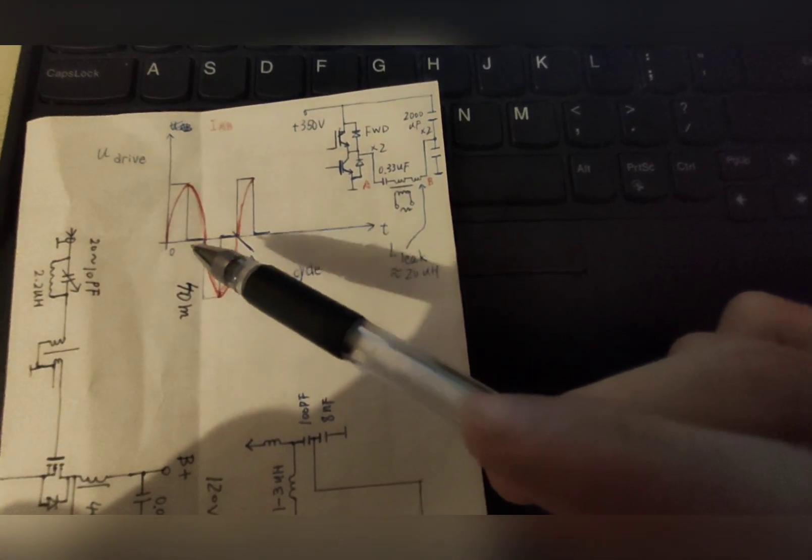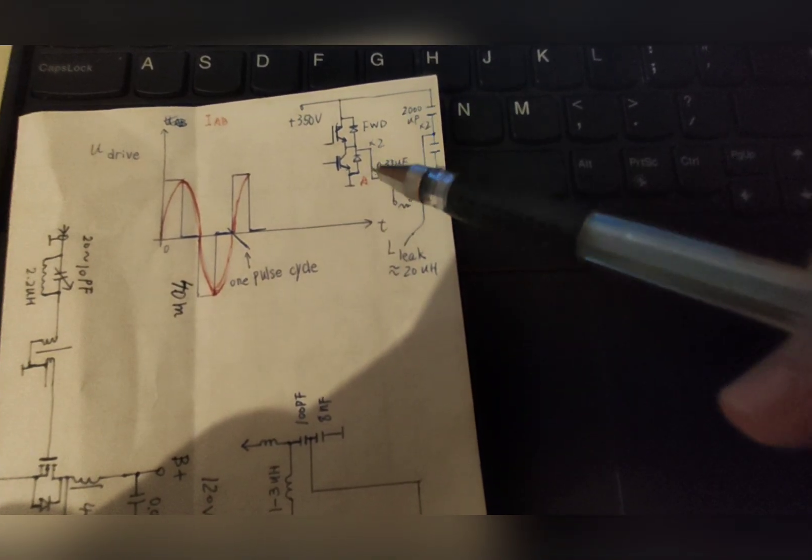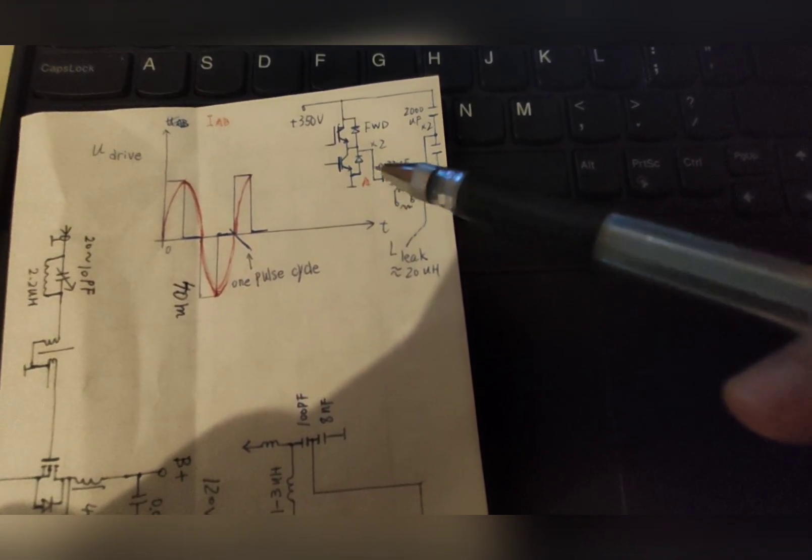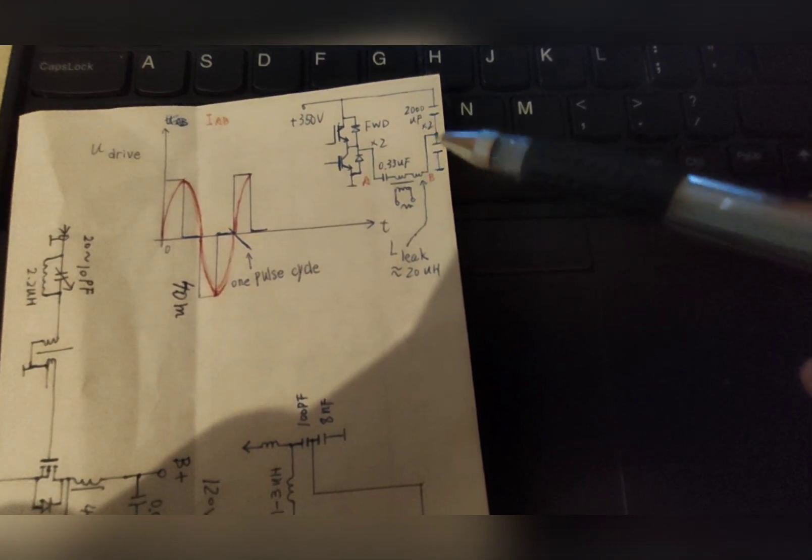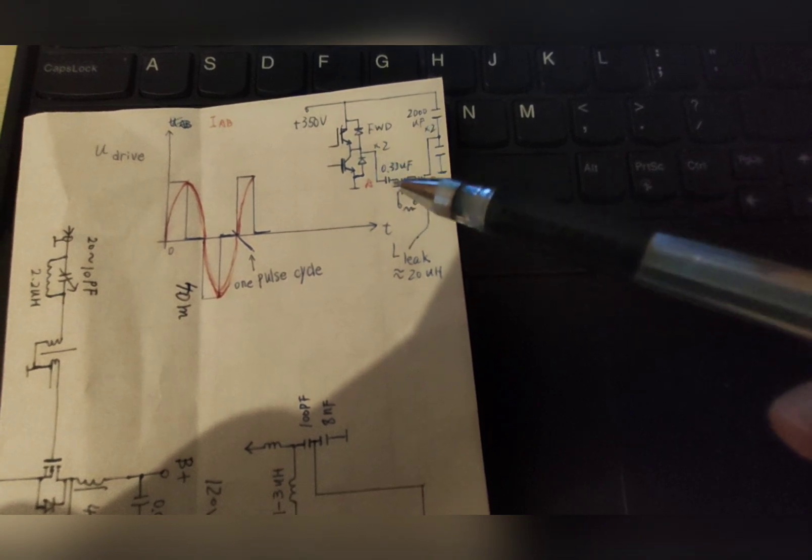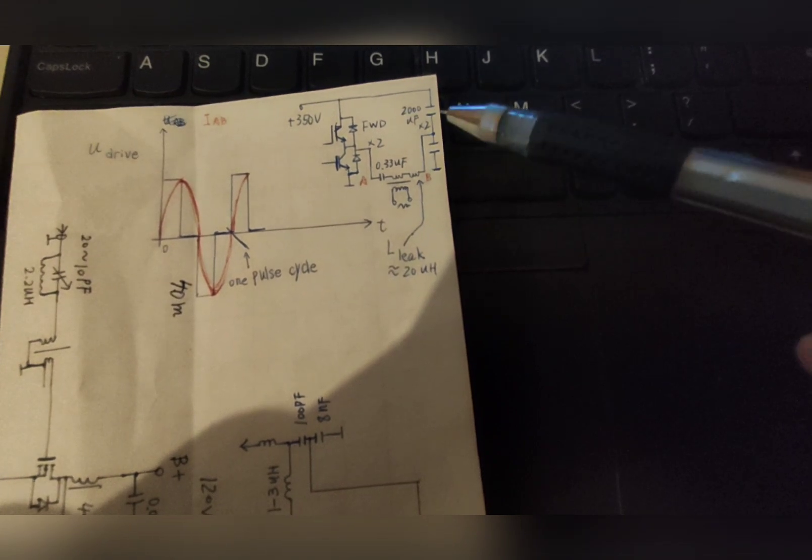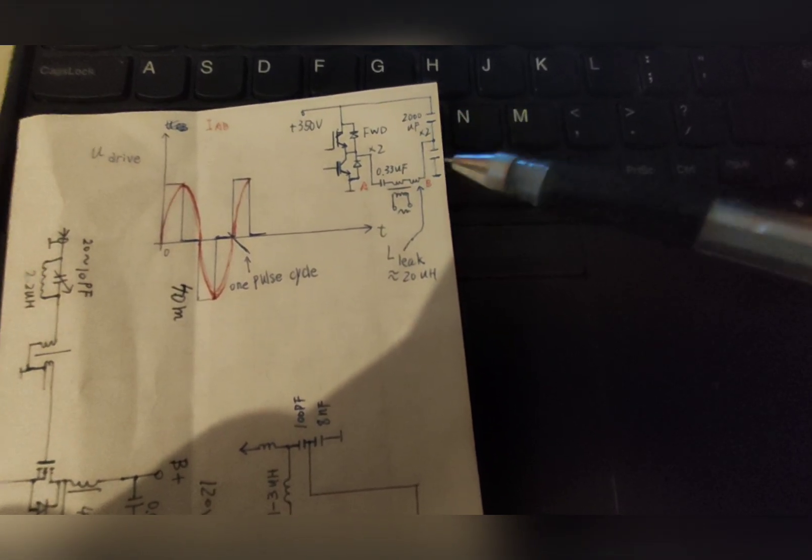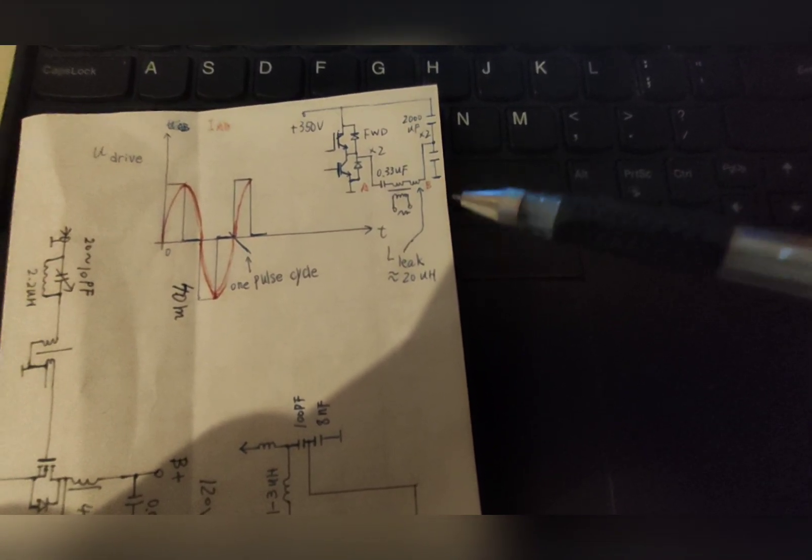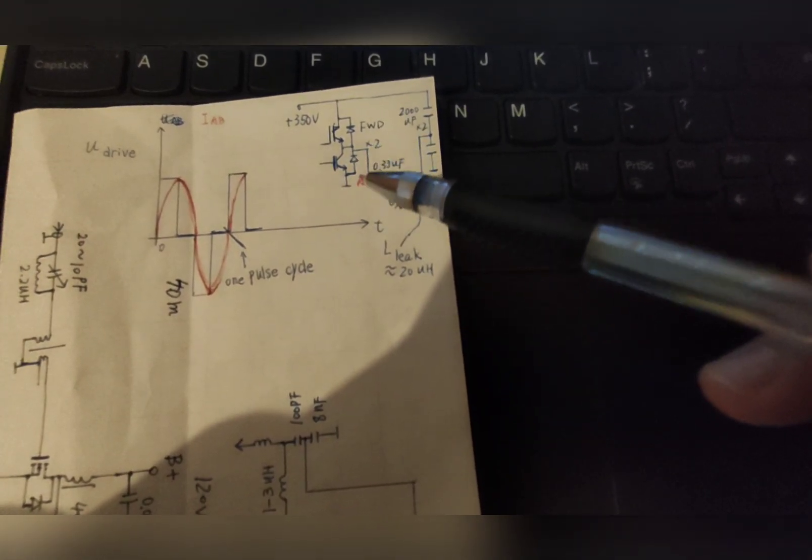At this point, we turn this IGBT off. So the current still goes from A to B, but this time through the lower part of the circuit, going clockwise. It simply charges the bus capacitor. But due to the large capacitance of the bus capacitors, the voltage doesn't have a large increase. So the current still goes through the lower freewheeling diode.